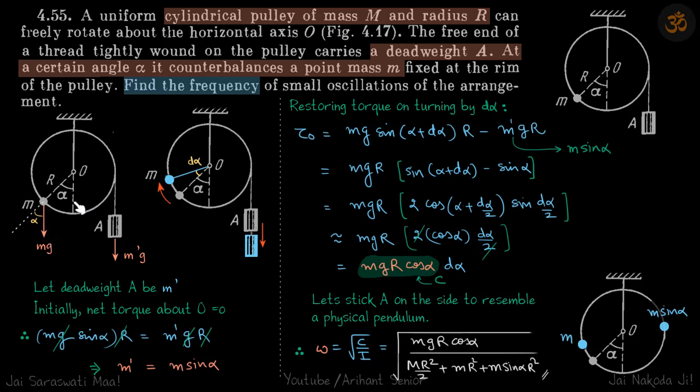So mg into this distance which is r sin alpha. So mg r sin alpha equals m dash g r. This gives m dash equals m sin alpha.